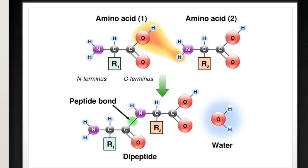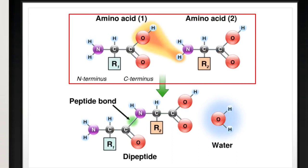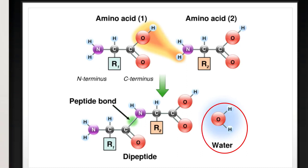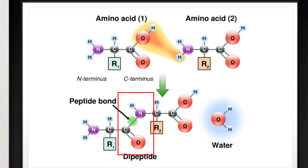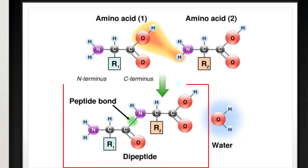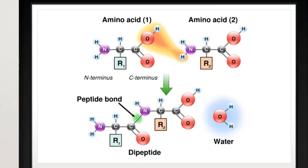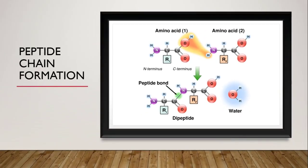اب ہم دیکھتے ہیں کہ یہ peptide chain بنتی کیسے ہے. دو amino acids ایک دوسرے کے قریب آتے ہیں. ایک amino acid کے carboxyl group سے OH اور دوسرے amino acid کے amino group سے ایک hydrogen مل کر water کا molecule بناتے ہیں، اور ہمارے پاس ایک peptide bond C=O—N—H کی formation ہو جاتی ہے. اس reaction میں دو amino acids ملے اس لیے اسے di-peptide کہا جاتا ہے، پھر 3 amino acids سے tri-peptide، 4 سے tetra-peptide and so on. The number of peptide bonds in a peptide chain is one less than the number of amino acids.